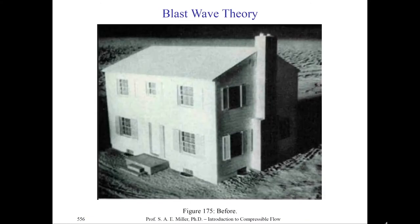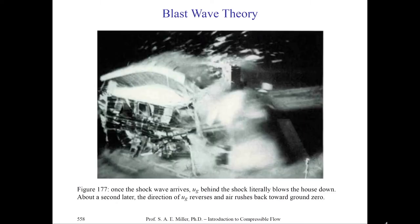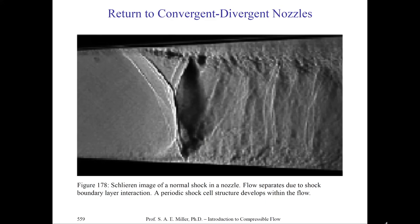Let's look at the Manhattan Project and one particular building built to study how blast waves affect houses. This is the original house before the blast wave. Upon detonation, intense optical radiation burns the front of the house. Then the shock wave arrives and induces a velocity U_g, which may be a supersonic Mach number behind the shock, literally blowing the house down. About a second later, U_g will reverse and the air rushes back toward ground zero. Blast wave similarity theory was remarkable — it allowed foreign adversaries to estimate nuclear explosion yields just by looking at publicly released blast wave images.